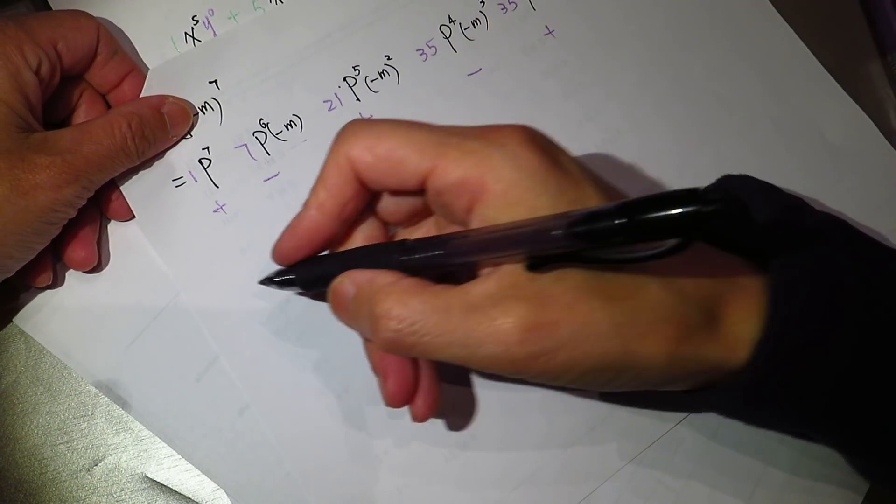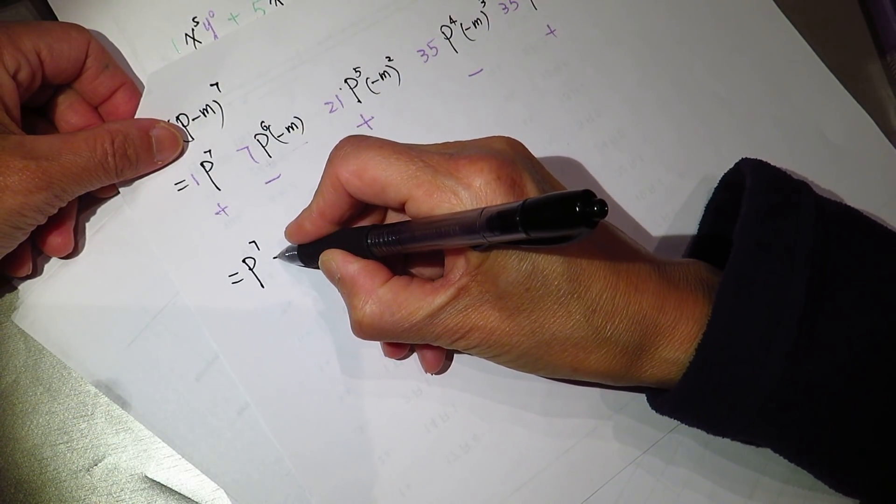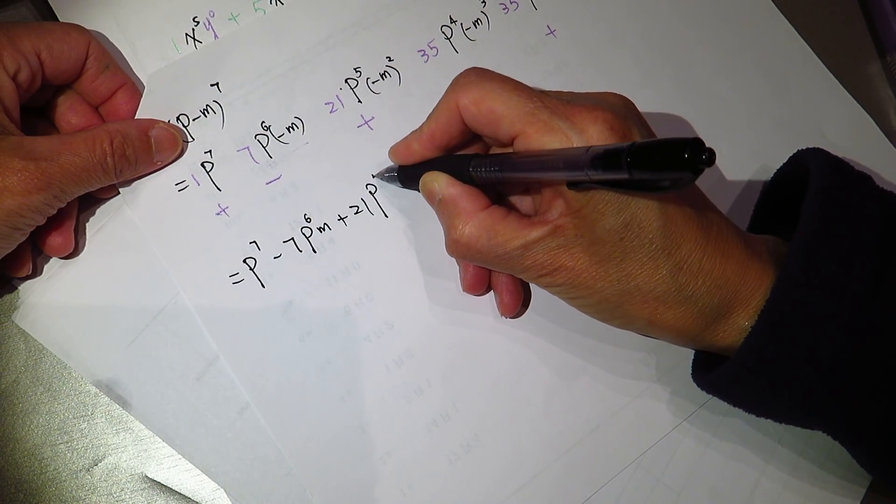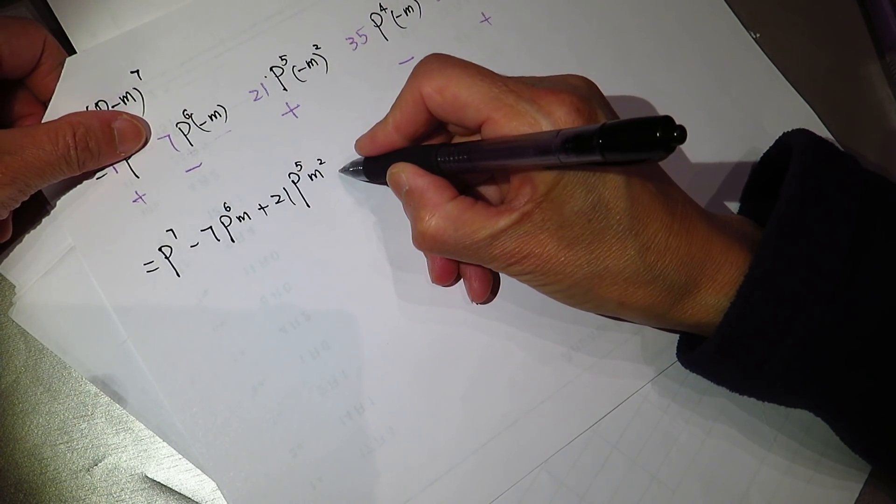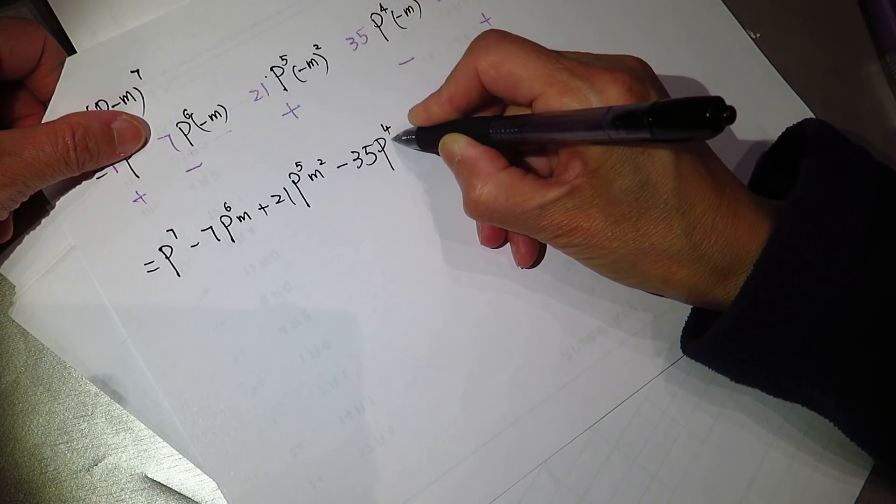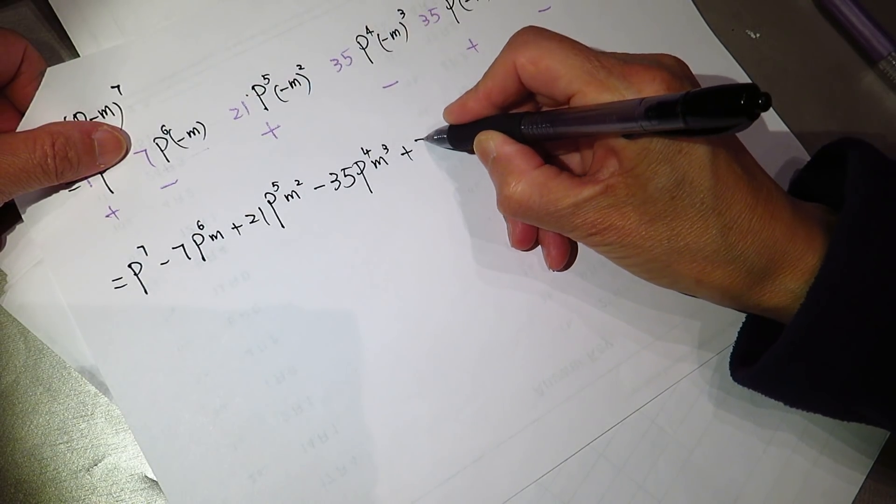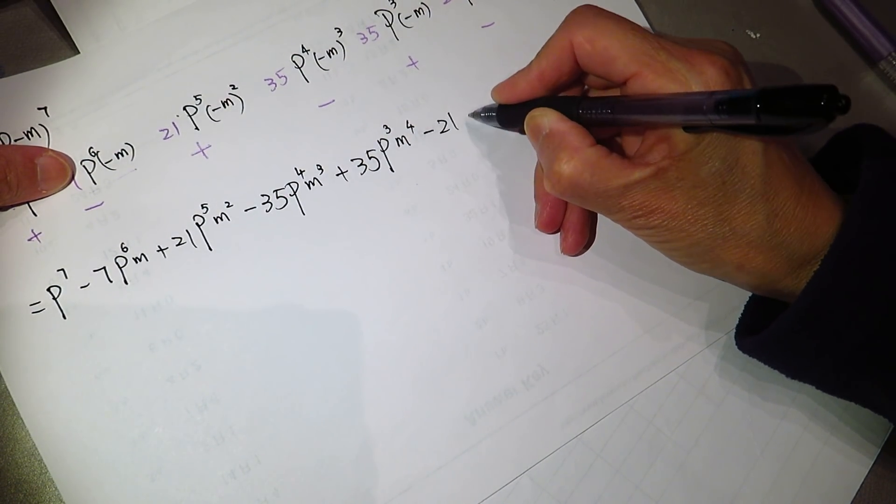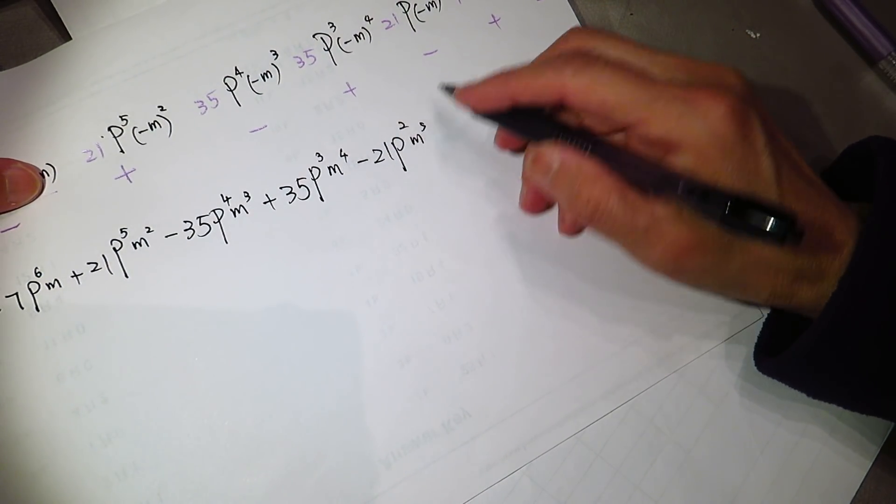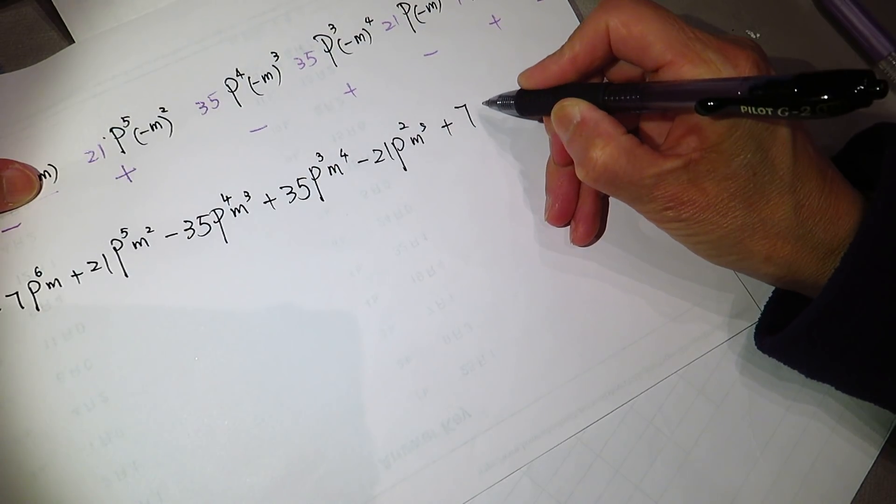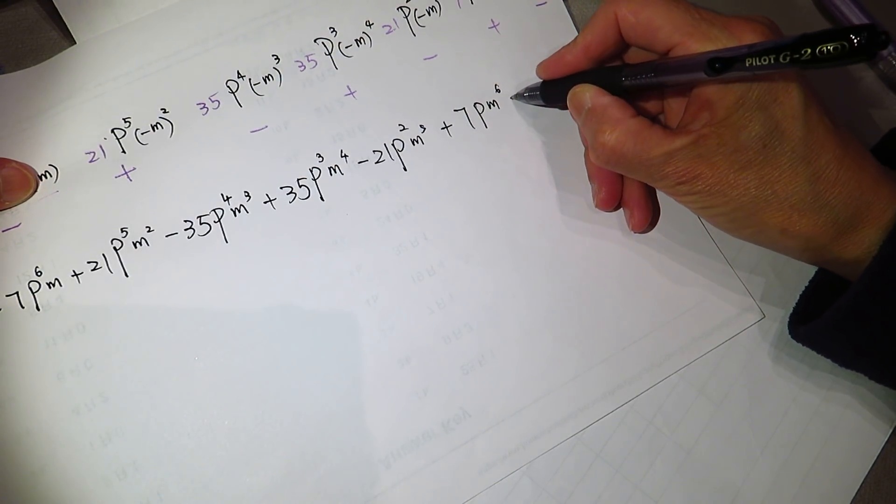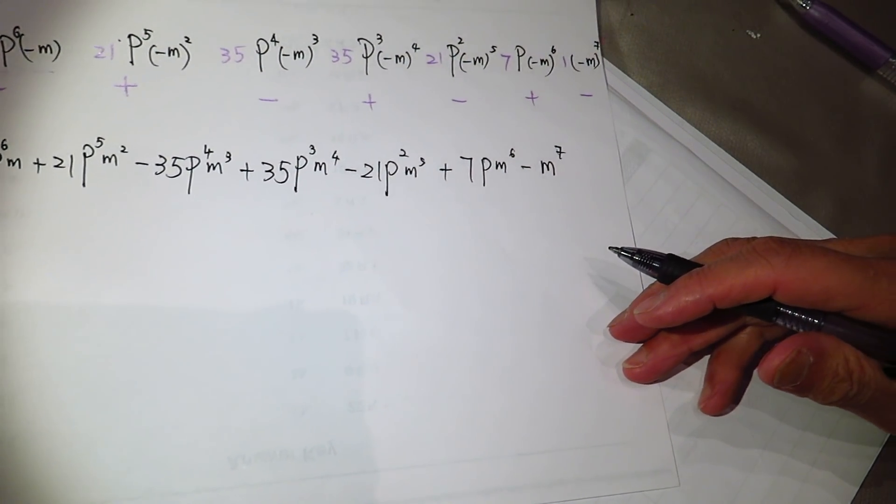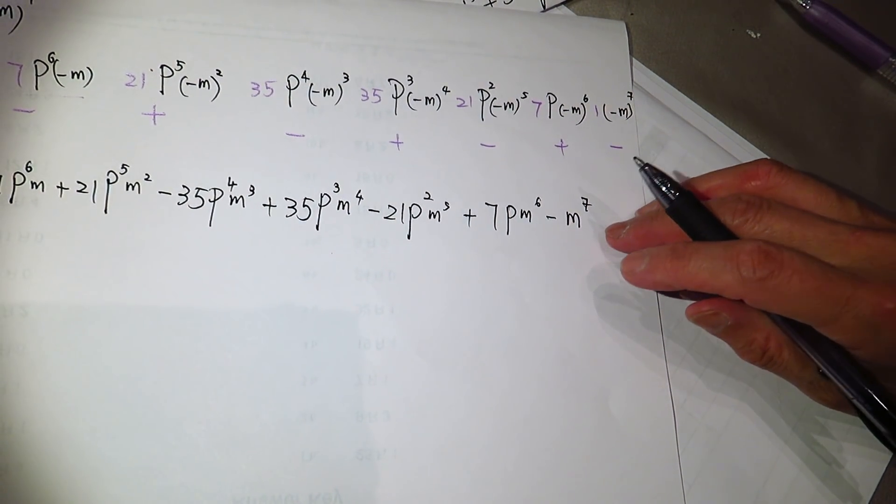So the result is P^7 minus 7 P^6 M, plus 21 P^5 M^2, minus 35 P^4 M^3, plus 35 P^3 M^4, minus 21 P^2 M^5, plus 7 P M^6, minus M^7. And that is the expansion of this term.